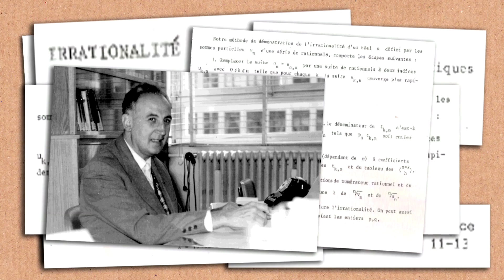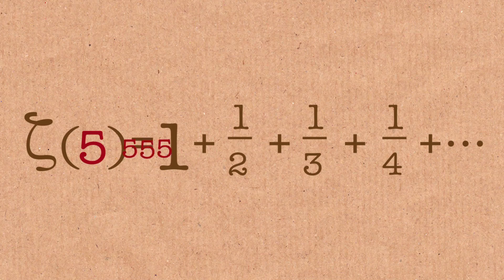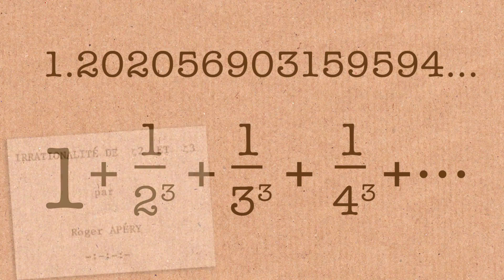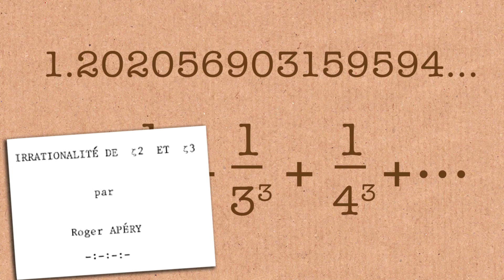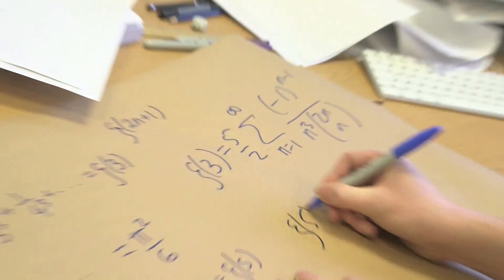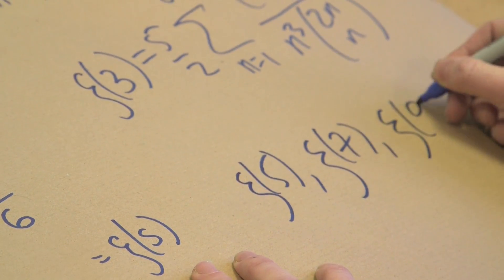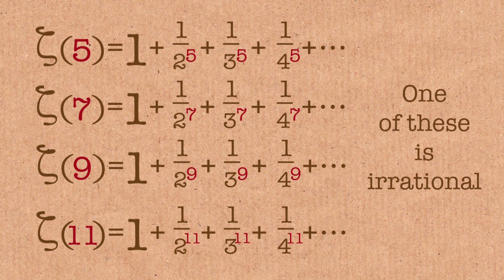It was a fabulous result — it sort of shook maths at the time. People started to use it to ask questions about the other odd values: zeta(5), zeta(7), and so on. They tried to use the same method, and all methods like that have so far failed, interestingly enough. So it's still not known whether those are rational or not. But zeta(3) is definitely irrational, though it's not known whether it's transcendental. What is known about the other odd ones is that there are an infinite number of irrational ones, but we don't know which ones they are. It's even known that one of zeta(5), zeta(7), zeta(9), and zeta(11) is irrational — but we don't know which one. So very little is known about it. I think it's a fabulous number.